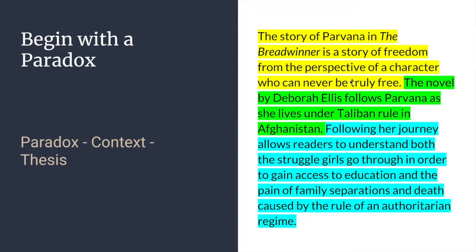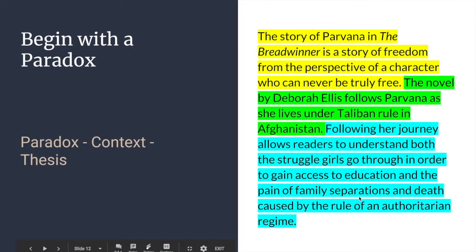From there, we need to provide a little bit of context, because this statement can be really confusing if somebody doesn't understand the story. We give just enough information: 'The novel by Deborah Ellis follows Parvana as she lives under Taliban rule in Afghanistan.' Then the thesis: 'Following her journey allows readers to understand both the struggles girls go through in order to gain access to education and the pain of family separations and death caused by the rule of an authoritarian regime.' This looks like a four-paragraph paper — two main points and a conclusion.